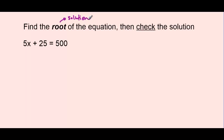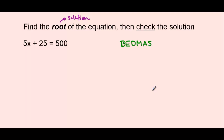5x plus 25 equals 500. We could guess and check to see what value for x would allow the left side to equal the right side, but we're going to use opposite operations in order to isolate for x. When isolating for a variable, we still think of BEDMAS, our order of operations: brackets and exponents, division and multiplication, and then addition and subtraction. But when we isolate for a variable, we do these steps in reverse order. So we first look for subtraction and addition, then division and multiplication, and finally any exponents and brackets.